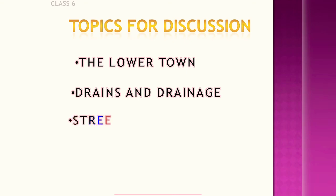So how were the streets? Let us discuss the streets of the Indus Valley Civilization. The roads laid at Harappa were based on a grid system. Streets were oriented east to west. The roads ran parallel to each other and were cut at right angles by smaller roads.